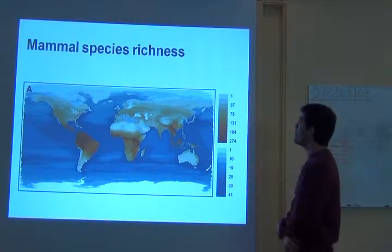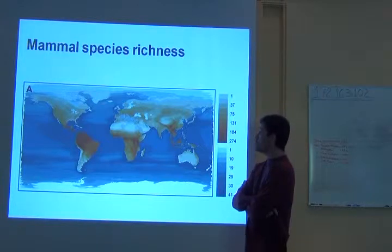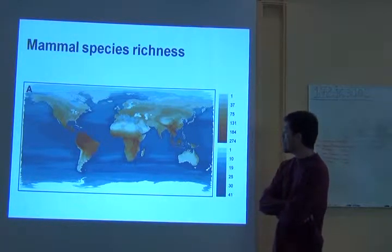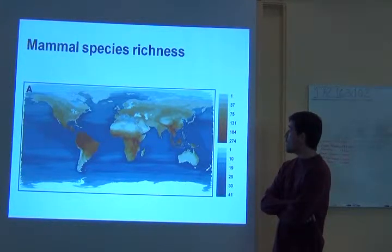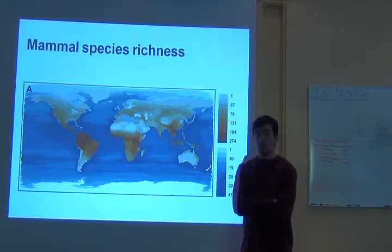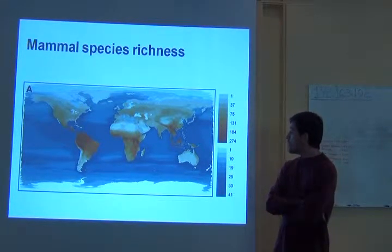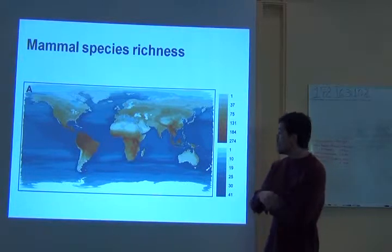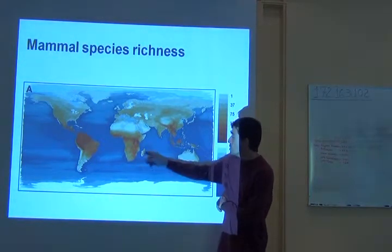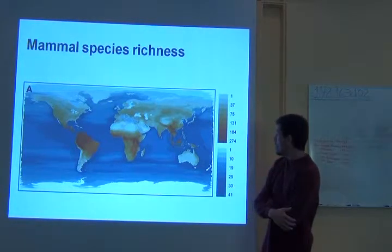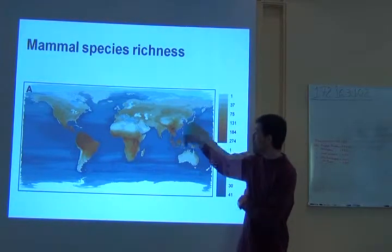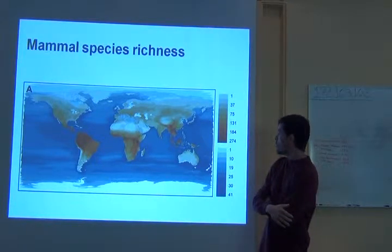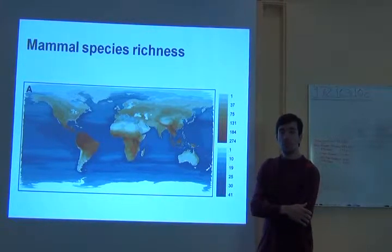This is the map of mammal species richness — a global map. Here we can also see some geological features of the planet: major deserts, and the effects of islands. So Madagascar has less species than Africa, and Australia has less species than the rest of the continent.